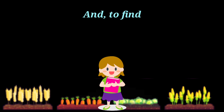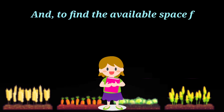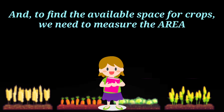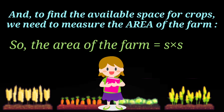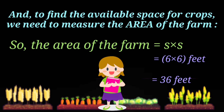To find the available space for crops, we need to measure the area of the farm. The area formula is side multiplied by side — aapko pata hai ki square ki side 6 feet hai — so 6 × 6 = 36 feet. The space available for crops is 36 square feet.